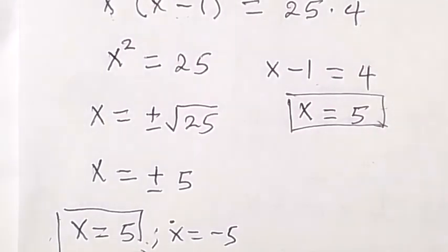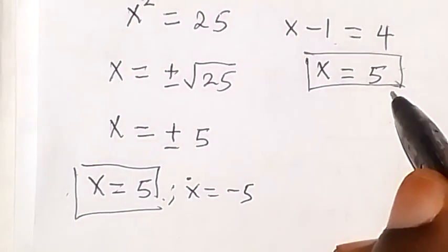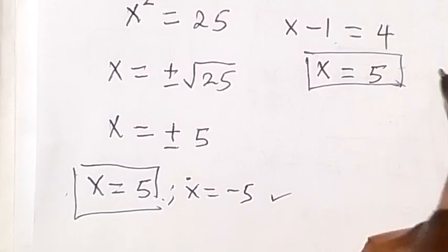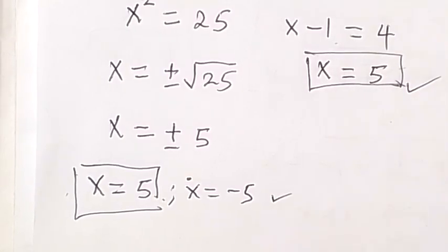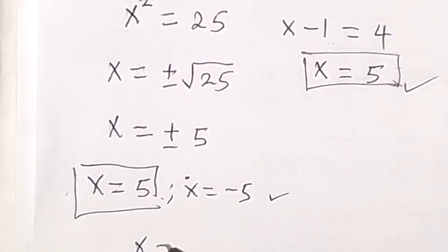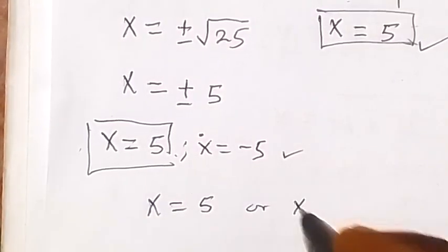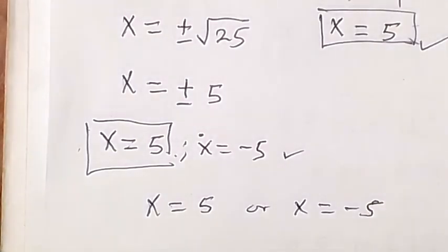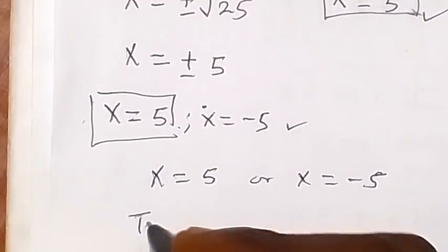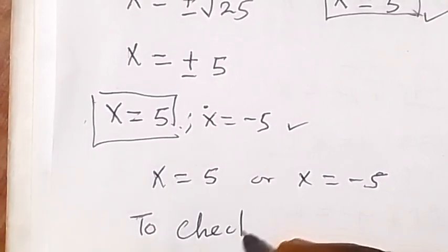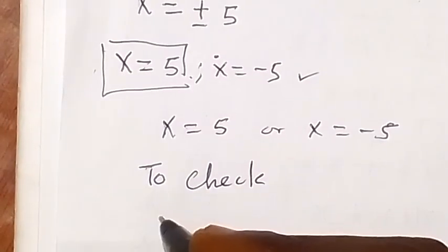So we have x equals to 5 on this side, x equals to 5 on this side. We can take one from there, so is it that our x is 5 now or our x is minus 5? So we can check.